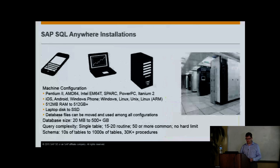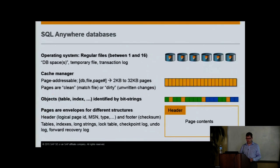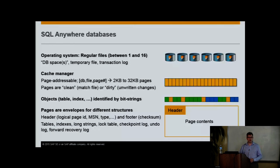A question clarified that by default there's only one database file and one transaction log — those two things are what you need to move around. You can put them anywhere without a special directory. You might have more than one DB space if you want to put tables on different physical devices because they're big, or to partition the work — putting things that don't change very often in one DB space.